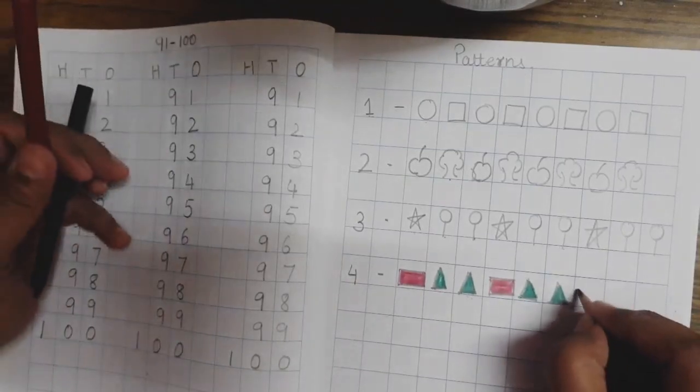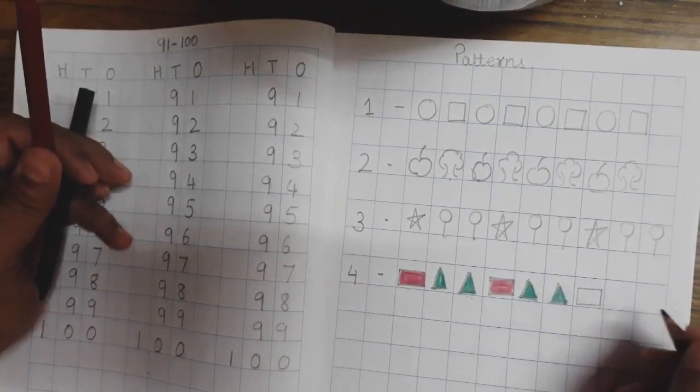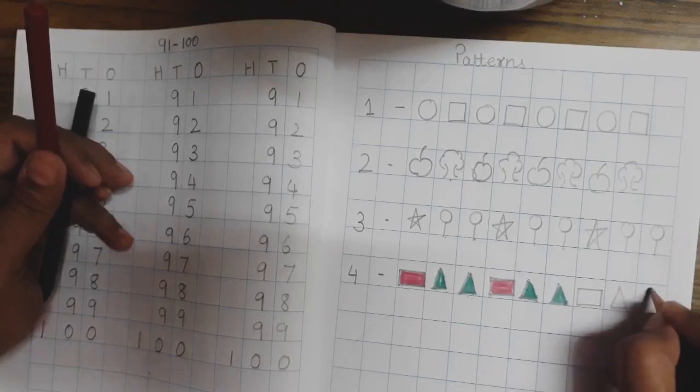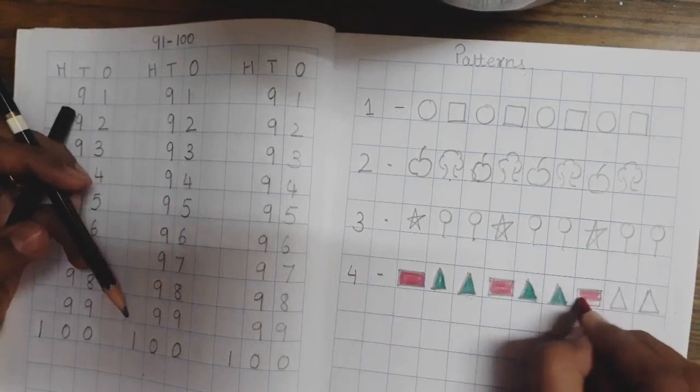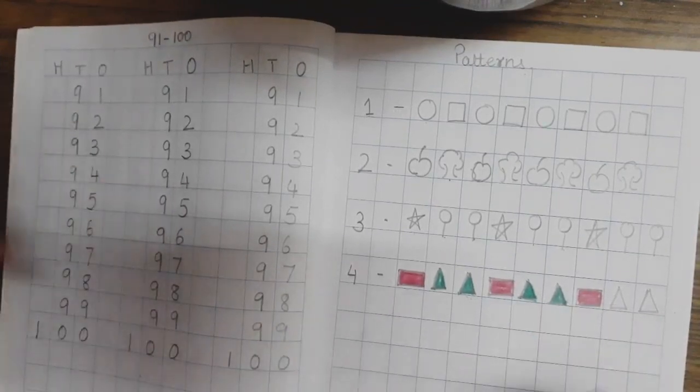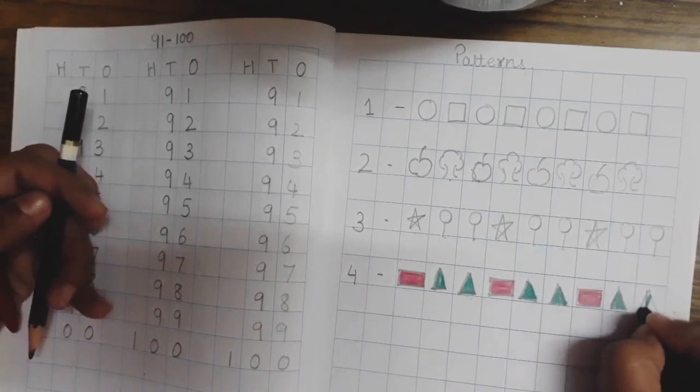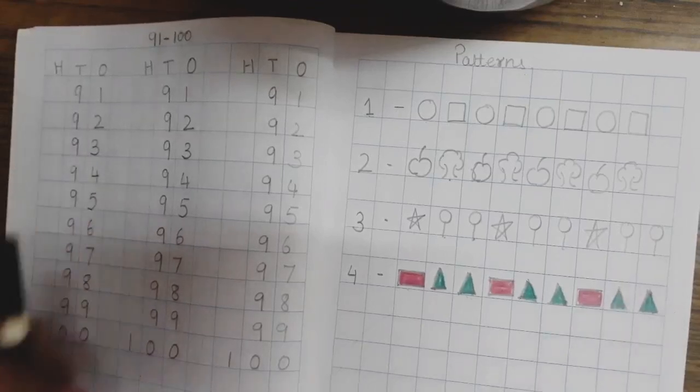Now, once more, we will draw after triangles, we have to draw 1 rectangle and then 2 triangles. Yes. So, again, red and green. So, this way, we have done different patterns.